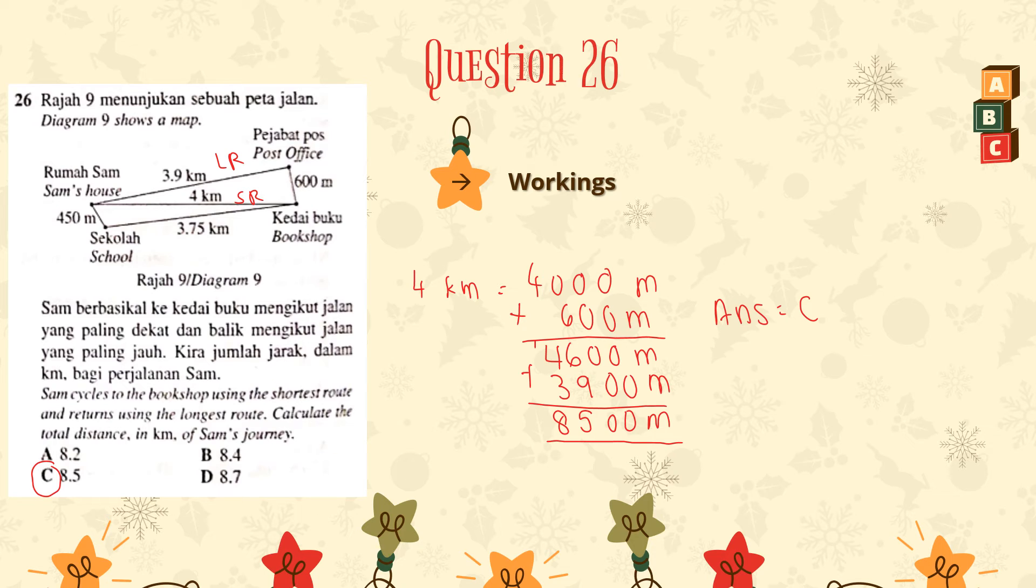But then, some of us will just see this whole map and think, oh, this is 3.75, which means this must be the shortest route. And then this is 4 km, so this is supposed to be the longest route. But actually, it is wrong. Because, as you see here, Sam wants to travel from his house to the bookshop. Which means if you follow this route, he has to pass through the school. So 3.75 km plus 450 m, it would be a longer distance. A longer distance than 4 km.